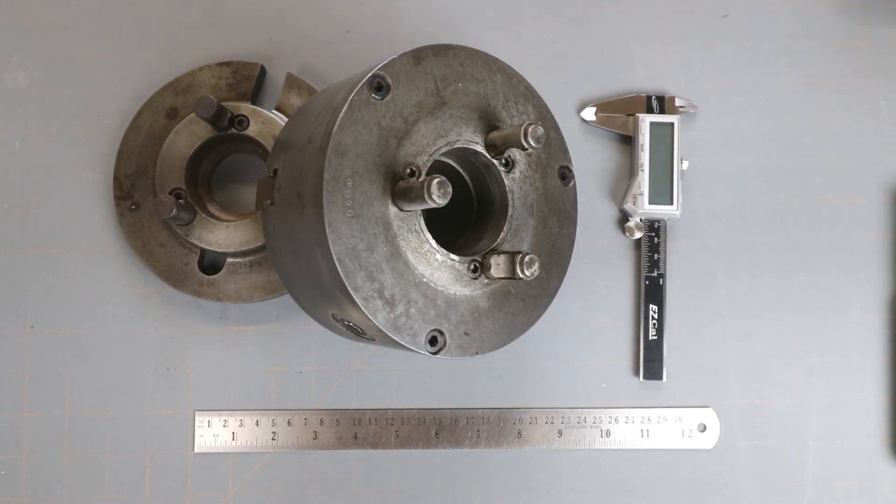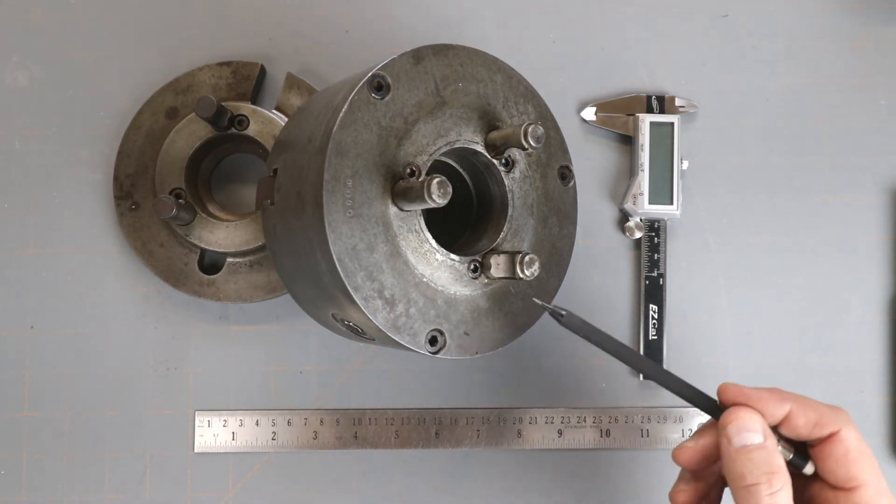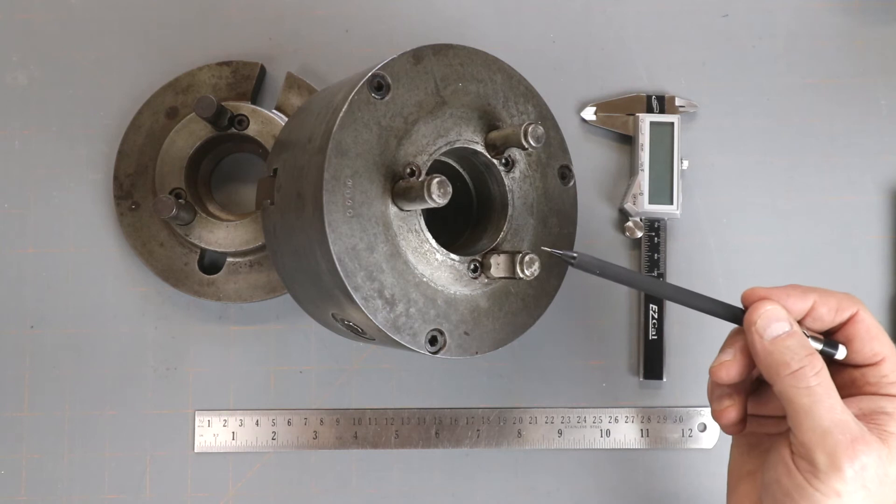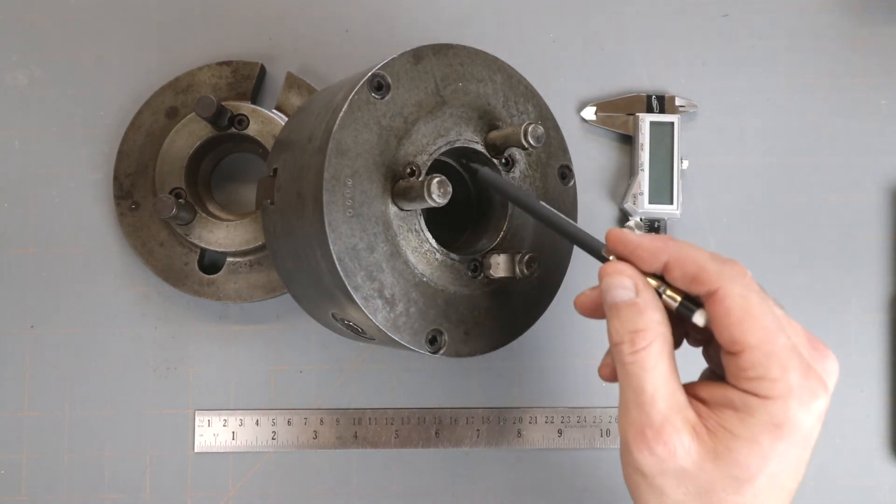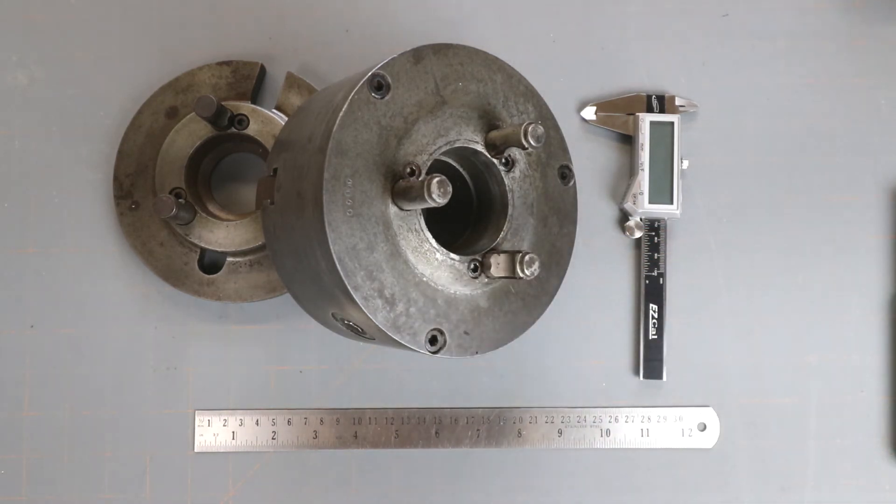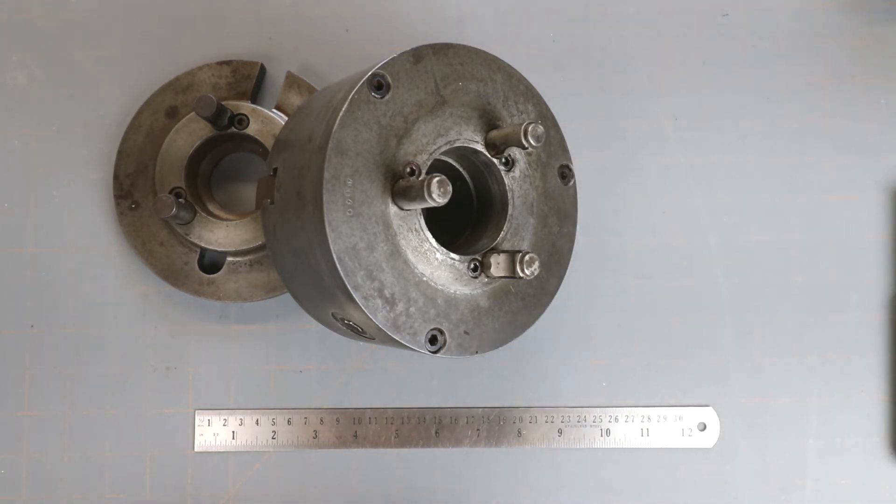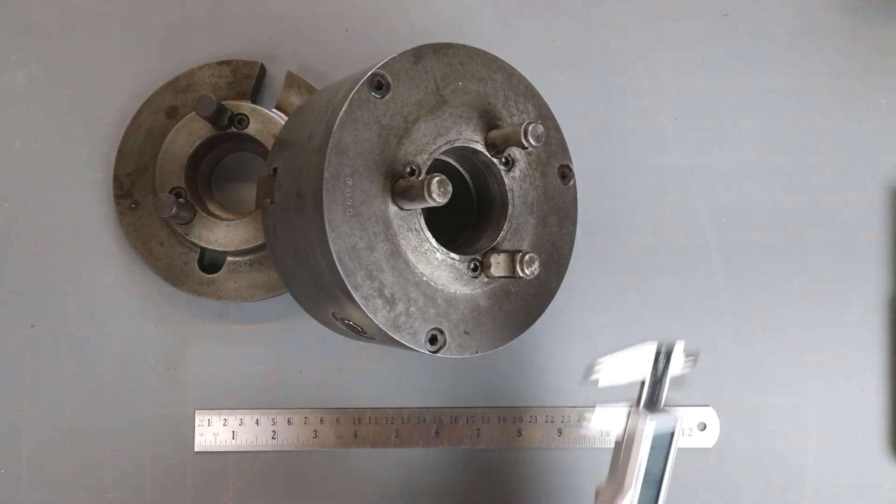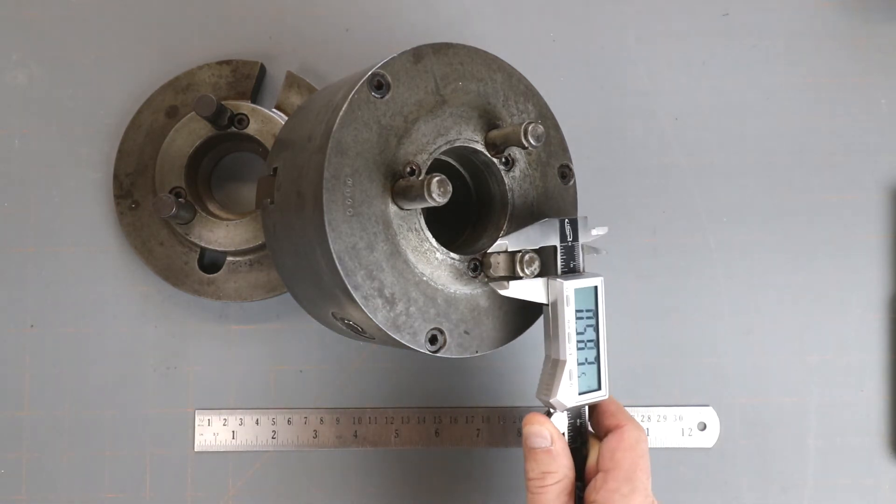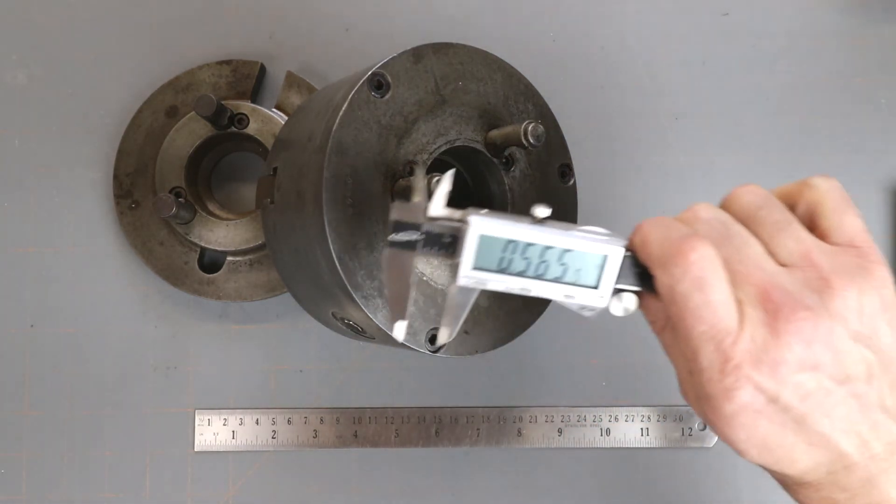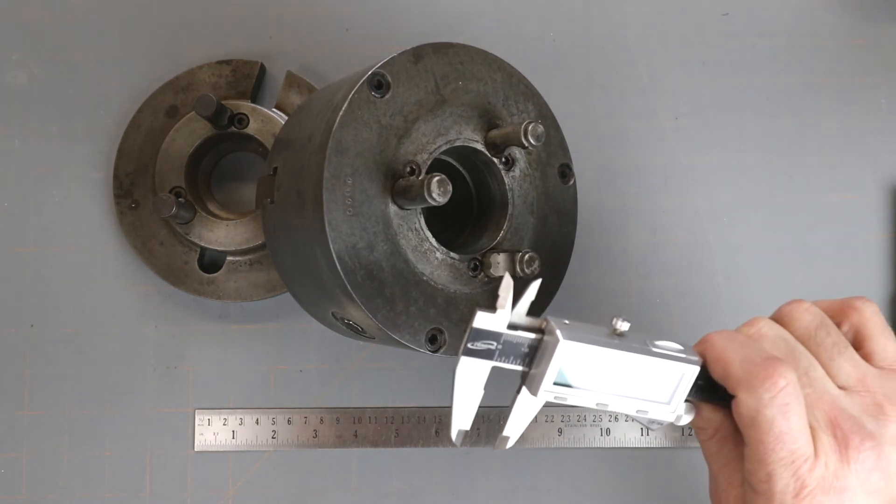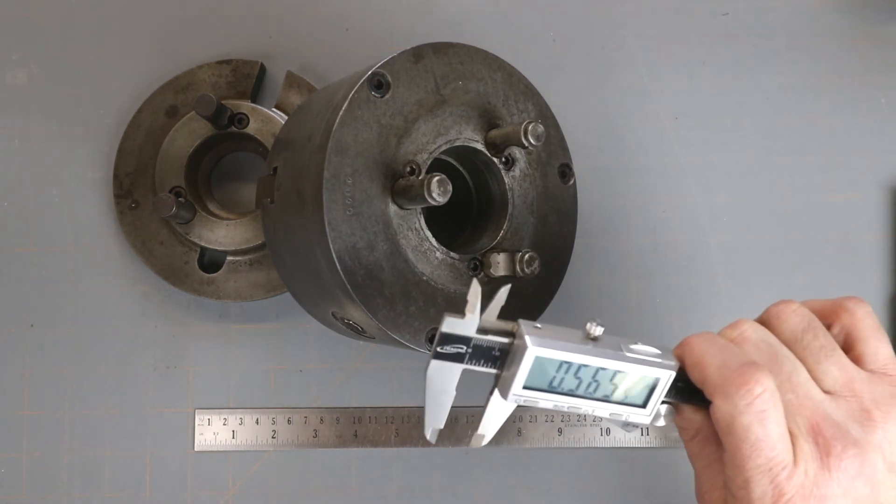The difference in the measurement can be found by measuring the diameter of the stud and the diameter of this hole. For a D1-3, we can simply measure the stud. It should be around 9/16 of an inch or 562 thousandths.